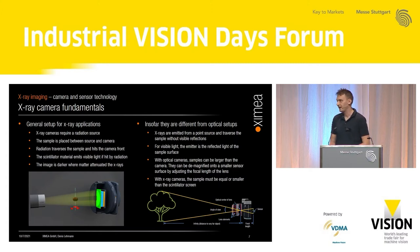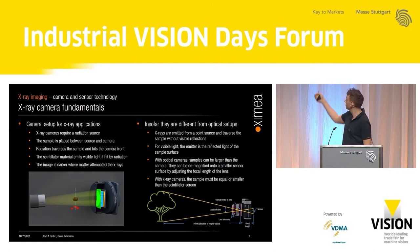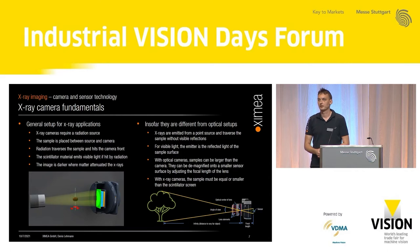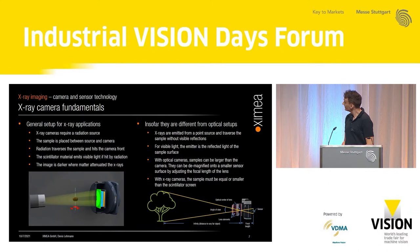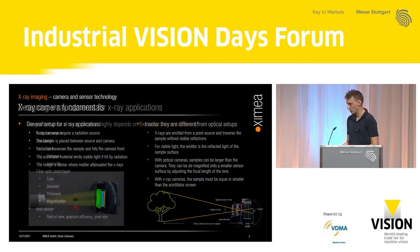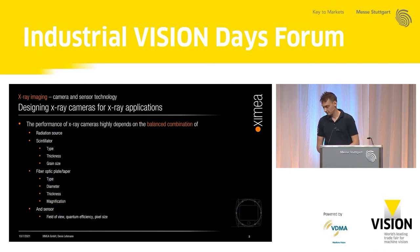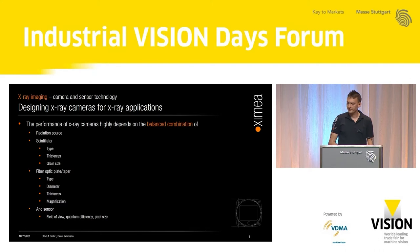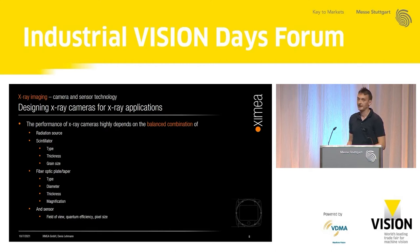For optical setups, the reflected light from large objects is demagnified onto the sensor surface simply by changing the focal length of your lens. For X-ray cameras, there is no lens. That means the sample must be equal to or smaller than the size of your field of view or scintillator screen. Every X-ray camera is different and usually customized to a specific application. Performance highly depends on the balanced combination of the radiation source, scintillator, fiber optic plate, and sensor.